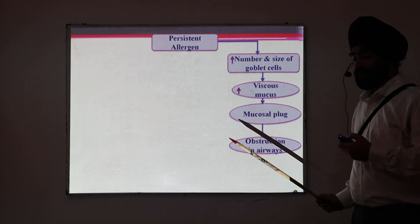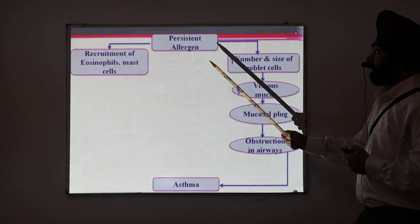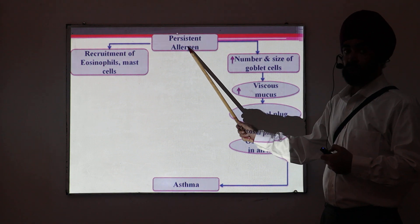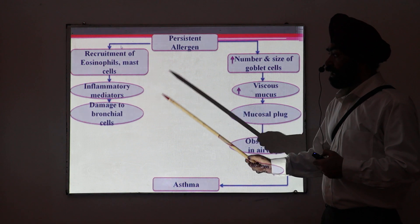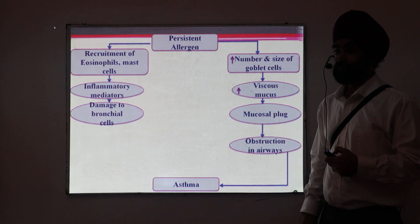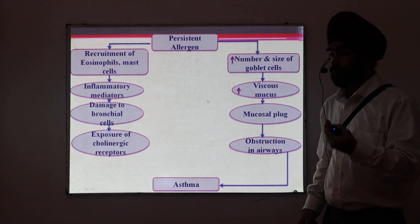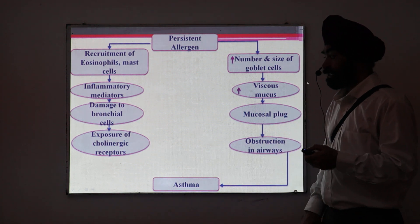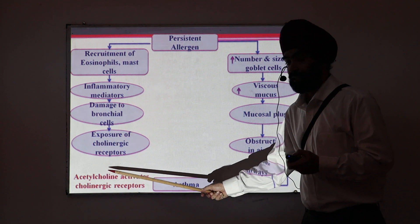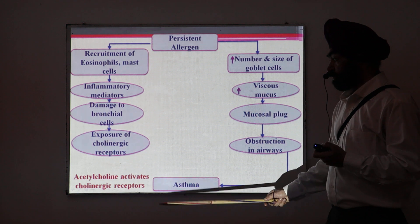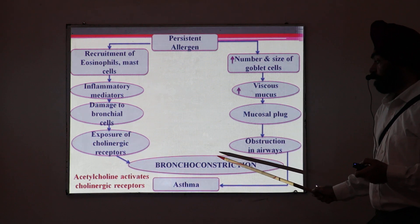This mucosal plug will obstruct the airway, which is an important feature of asthma. Secondly, as it is a chronic inflammation, in response to the allergen there is a recruitment of eosinophils and mast cells, and they release a number of inflammatory mediators which are responsible for producing damage to the bronchial cells. If the cells are damaged, the underlying nerve fiber receptors are exposed — that is, there is exposure of the cholinergic receptors. Now, if the cholinergic receptors are exposed, the parasympathetic nervous system, whose neurotransmitter is acetylcholine, is able to produce more actions, which leads to bronchoconstriction.